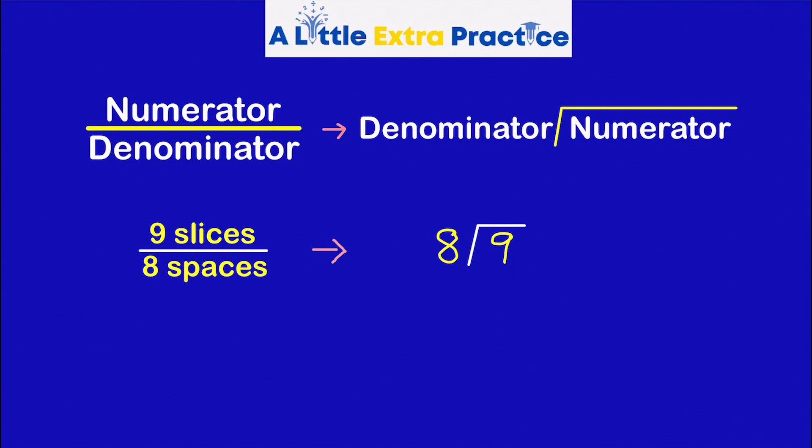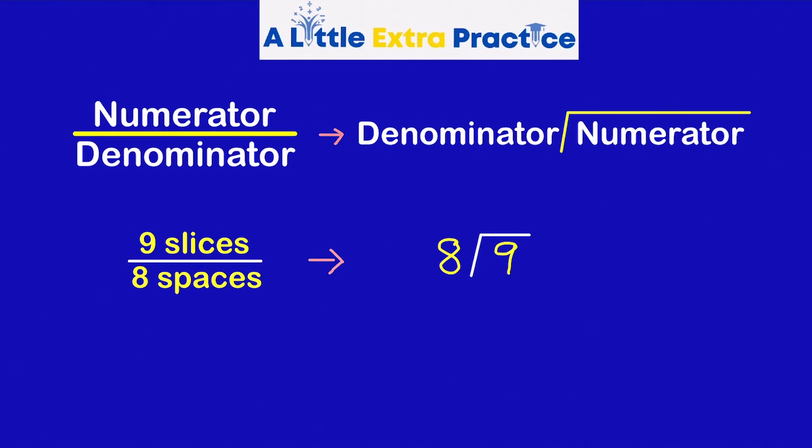The next step is to set up the problem. We have nine slices over eight spaces. Nine is the numerator. Eight is the denominator. Let's go ahead and divide.